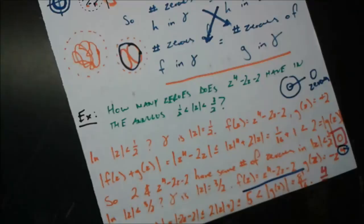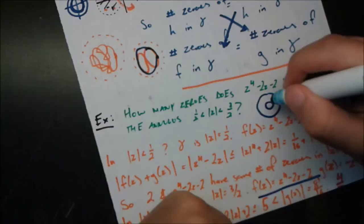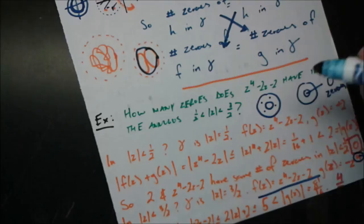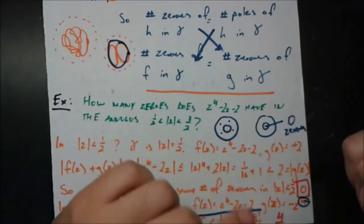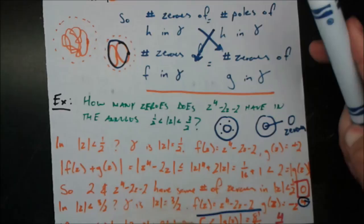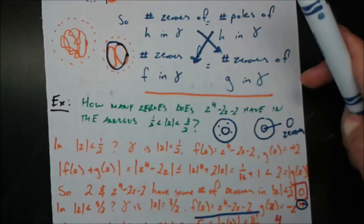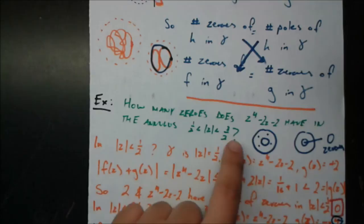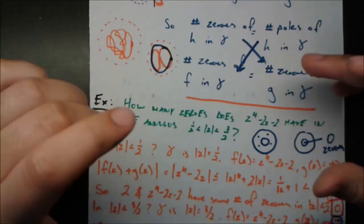g(z) = −z⁴ has one distinct zero at z = 0 but with order four, so it has four zeros counting multiplicity inside that disk. Therefore f(z) = z⁴ − 2z − 2 also has four zeros inside the large circle. Inside the small circle it has zero zeros, so all four zeros must lie in the annulus between them. By the fundamental theorem of algebra, a degree-four polynomial has exactly four zeros counting multiplicity, so we've found all of them. Rouché's theorem lets us not only count zeros in a region but pinpoint them between regions — a very powerful result.